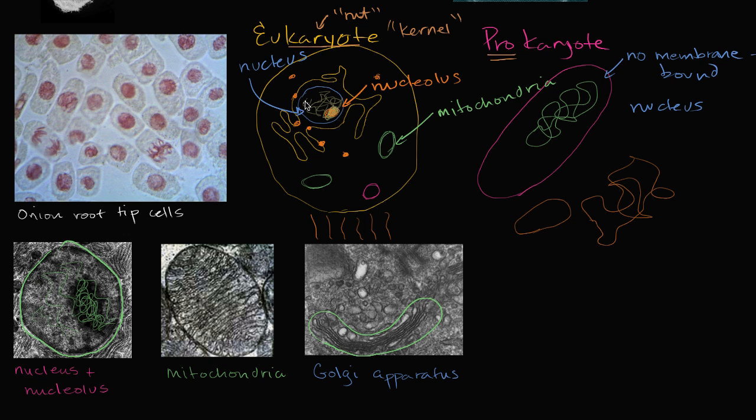So those are the three core distinctions. Nuclear membrane, other membrane-bound organelles, like mitochondria and Golgi, and the Golgi apparatus. And then you also have single strands, multiple single strands of DNA, versus circular DNA. Other things is that eukaryotes tend to be larger, while prokaryotes tend to be smaller, and they tend to be simpler.